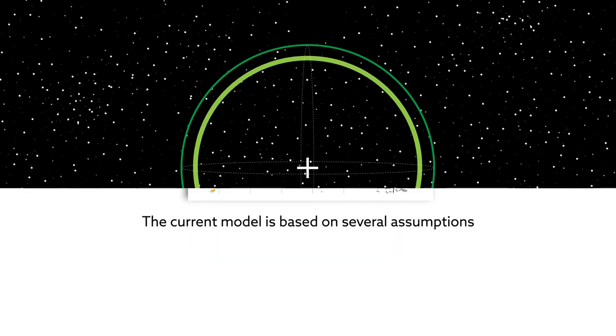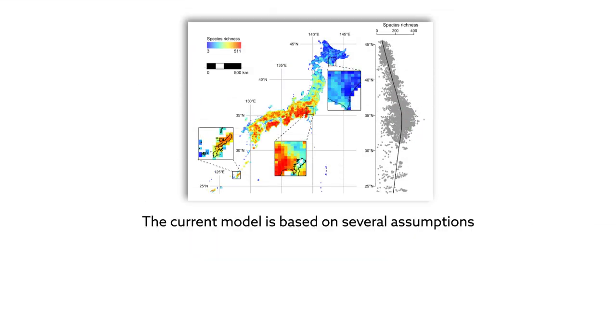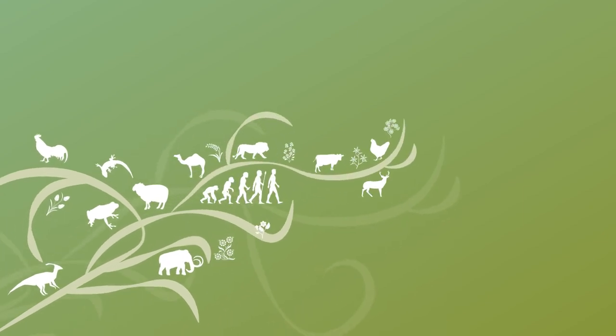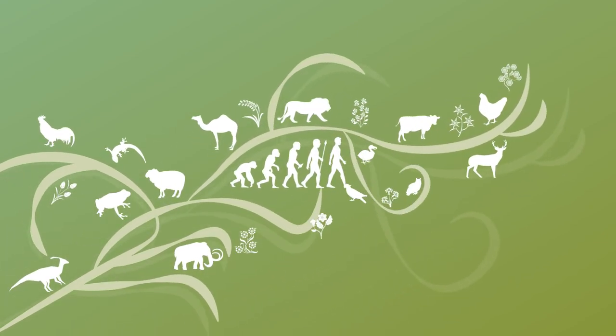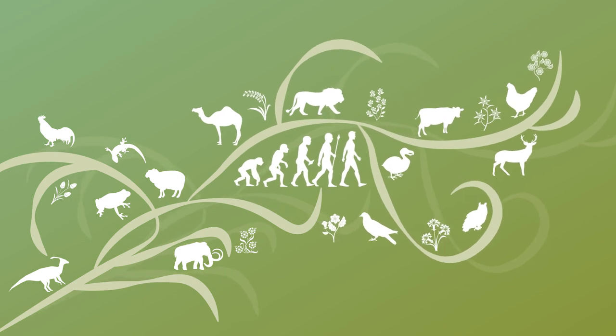The current model operates on several assumptions that make it hard to calibrate, and the model does not account for changes in species' abundance over time. But with further refinement, the model could help researchers grasp the extent of biodiversity on Earth like never before, providing new clues to how evolution has shaped the world we live in today.